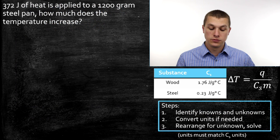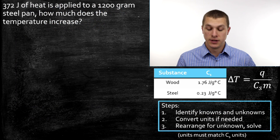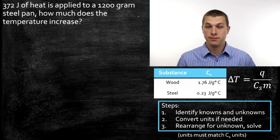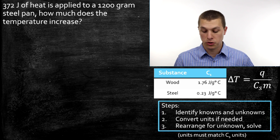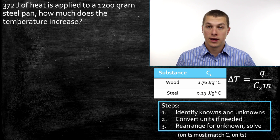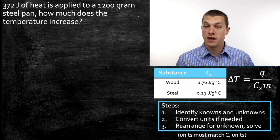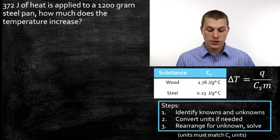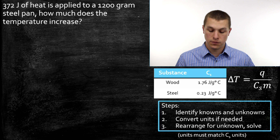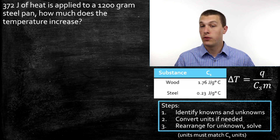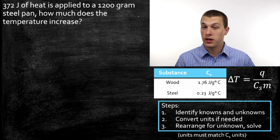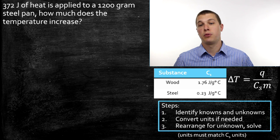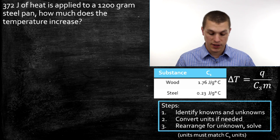The types of problems we can do with this equation include calculating the change in temperature — that's the most typical problem — but we can also calculate how much heat was added, calculate the mass of the object, and even use heat capacity to identify what something is made of. If we know the change in temperature, Q, and mass, we can calculate Cs.